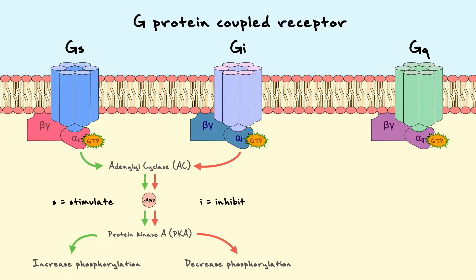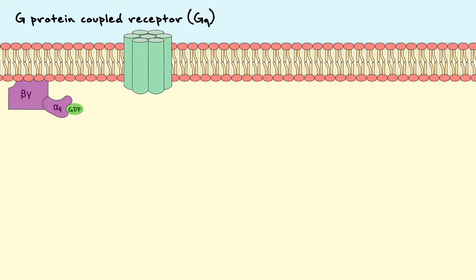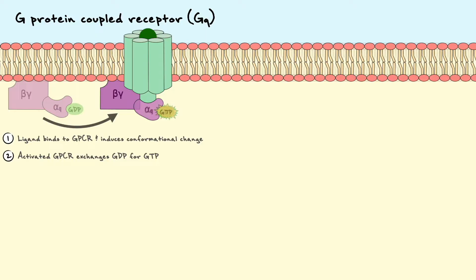Now that we have covered the GS and GI pathways, let's consider the GQ pathway. Just like the other GPCR pathways we have covered, the mechanism begins with the ligand binding to the GPCR and causing a conformational change to the receptor. The G protein binds to the receptor, causing the exchange of GDP for GTP, which leads to the dissociation of the αQ and β-gamma subunits.